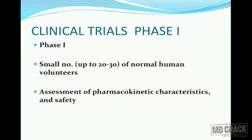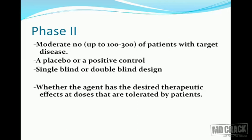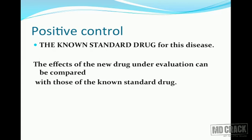After animal trials, the drug is tested in human beings — called clinical trials. Phase one is conducted in a small number of normal human volunteers who do not suffer from any illness, to assess pharmacokinetic characteristics and safety. Phase two includes a moderate number of patients with the target disease — about 100 to 300 patients. A placebo or positive control is used, and the design may be single blind or double blind. The purpose of phase two is to know if the agent has desired therapeutic effects at doses tolerated by patients.